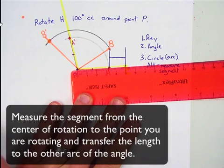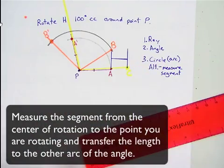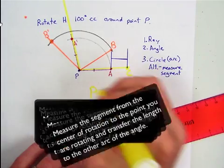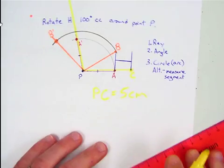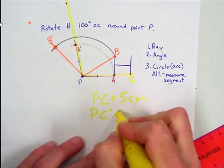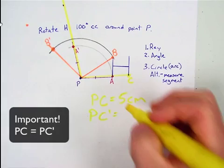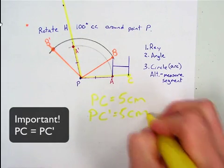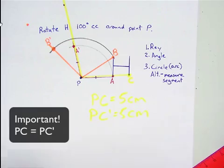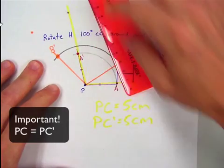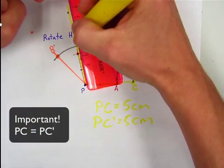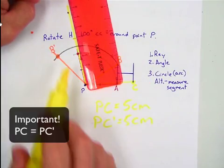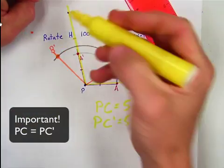And you should see here that this is, what, five centimeters. So if PC equals five centimeters, how long would PC prime equal? Five centimeters. So you could just measure PC prime out five centimeters, like so, and then put your point there.